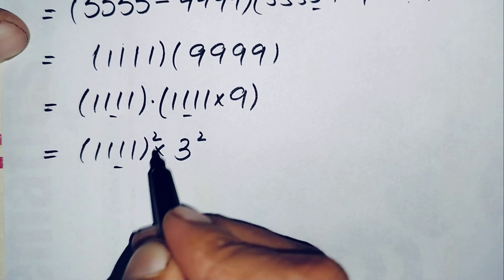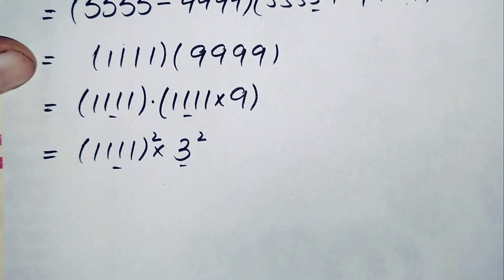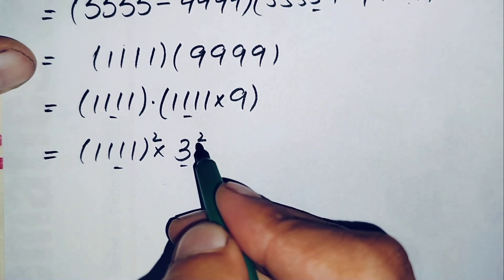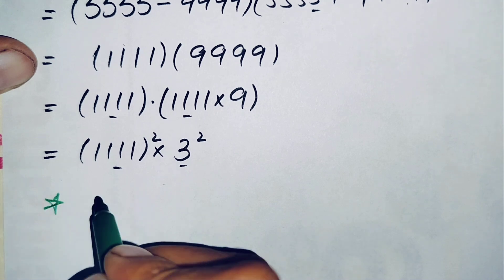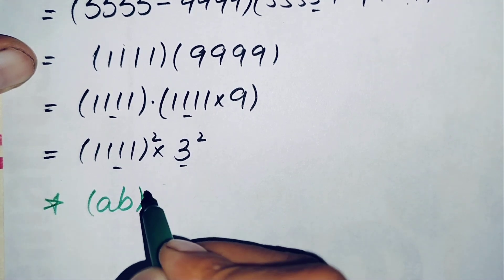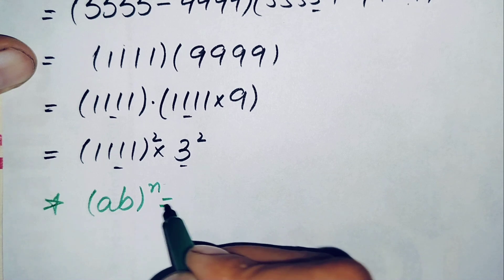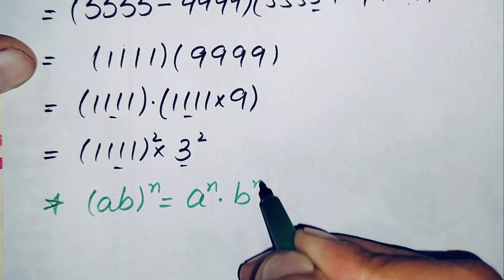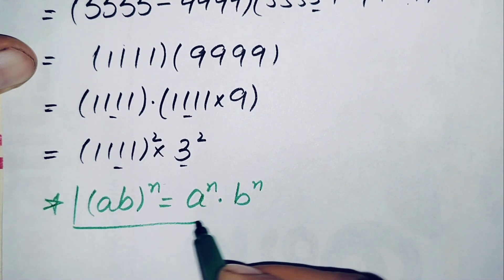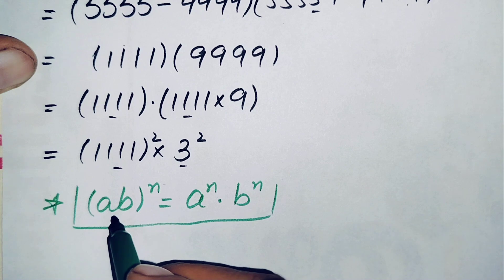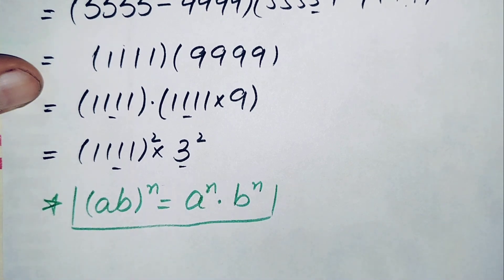Since there is a square on both numbers, we use the exponent multiplication property: a times b, raised to power n, can also be written as a raised to power n times b raised to power n. These two numbers are in this form, so we will change them accordingly.